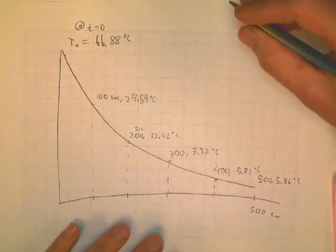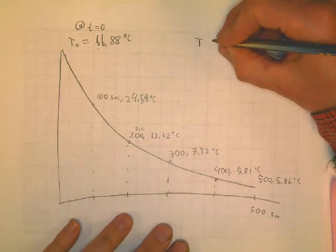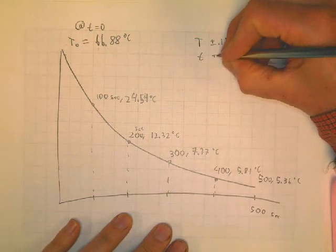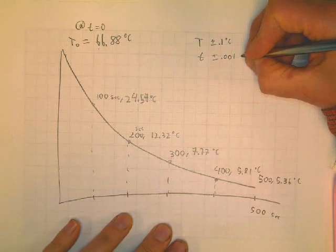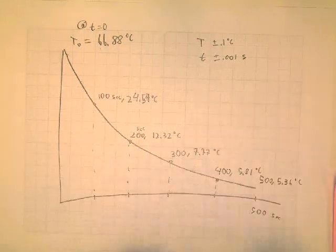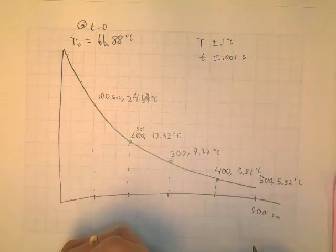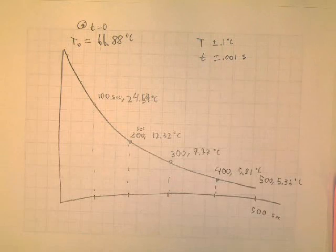And then the next thing we're going to do is we're going to calculate the K. Now, our formula is that T equals the original temperature, e to the minus kt, like this. And if we solve this for K, which we're going to want to do, we're going to go T over T₀, but the natural log of that equals minus kt.